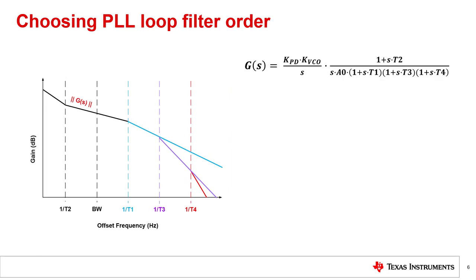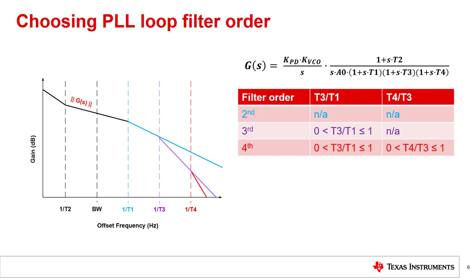Second order filters do not provide the best attenuation of spurs as they only have one pole, T1, and can only provide a roll-off of 40 dB per decade. With each additional pole, you can get an additional roll-off of 20 dB per decade. Third and fourth order loop filters are better for attenuating spurs. The higher pole ratio, the greater the attenuation, and with a fourth order filter, you can get roll-off of up to 80 dB per decade.